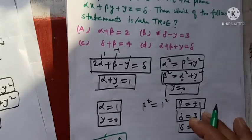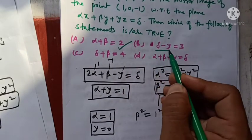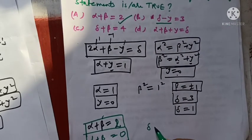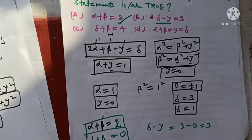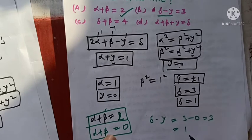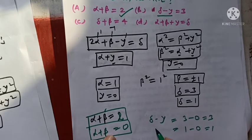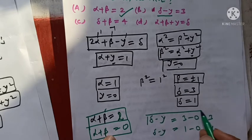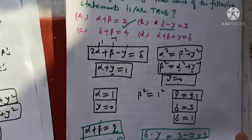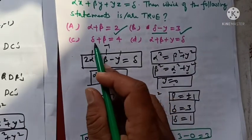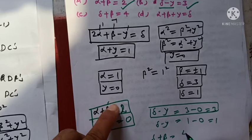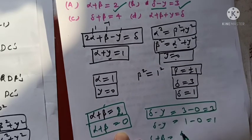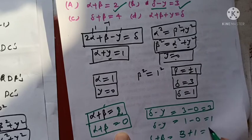Evaluating option (B) delta - gamma: delta = 3, gamma = 0, so delta - gamma = 3. Also delta = 1, gamma = 0, so delta - gamma = 1 as well. Option (B) states delta - gamma = 3, which is TRUE. Evaluating option (C) delta + beta: delta=3, beta=+1 gives 4; delta=1, beta=-1 gives 0. Option (C) states delta + beta = 4, which is TRUE.